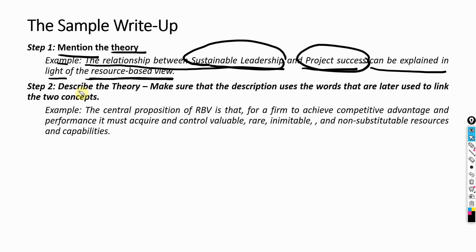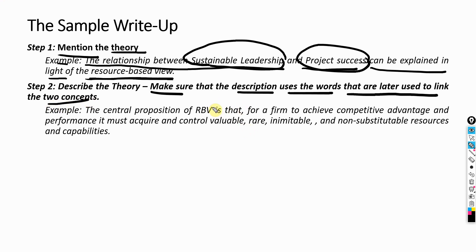The next step: describe the theory. Make sure that the description uses words that are later used to link the two concepts. There could be multiple explanations of Resource-Based View, so try to focus on the description of RBV that can help you link the two concepts — sustainable leadership with project success.